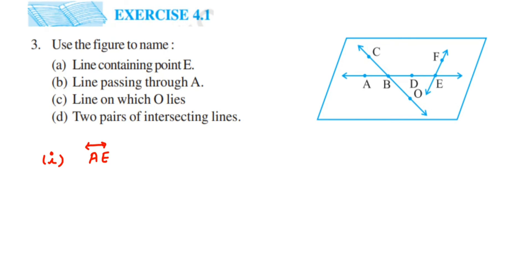The second one is line passing through A. A is a point which is here, and they're asking a line passing through this point A. So what is that line? There is one line which is crossing, which will be AE. This is point A and this is the line which is passing through it, so you can write down line AE.